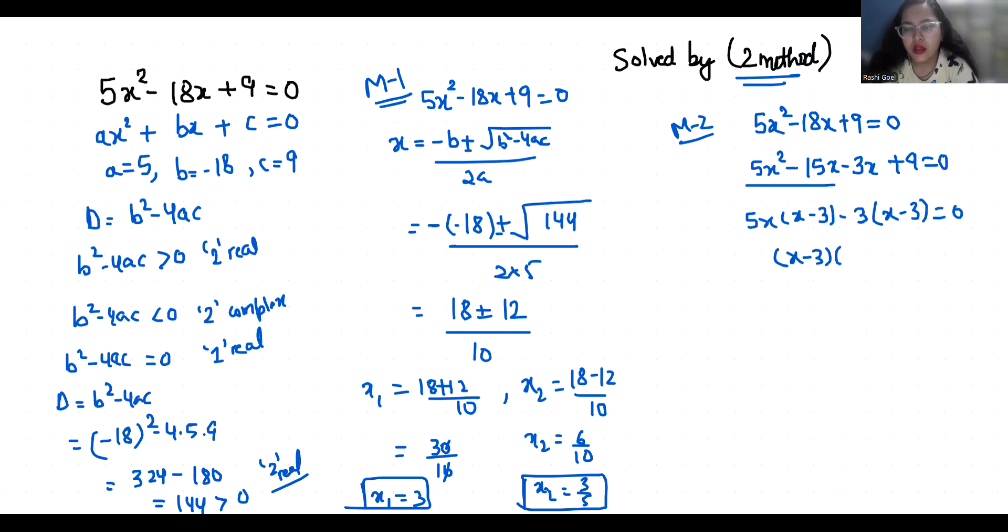So 5x-3=0. x-3=0, x=3. And 5x-3=0, x=3/5.